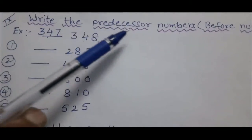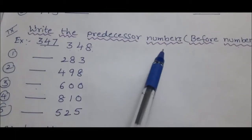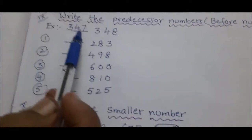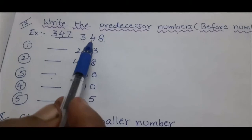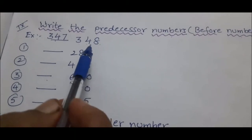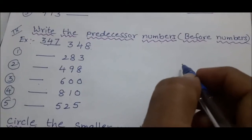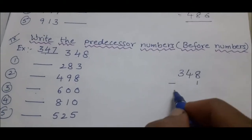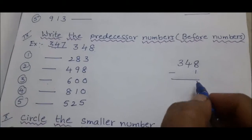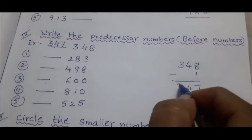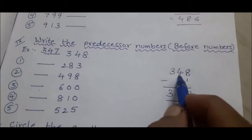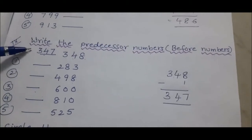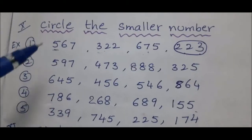Next: write the predecessor numbers, also known as before numbers. Example: 347 is the before number of 348. How do we get it? Just subtract 1 from the given number. 348 minus 1 equals 347. This is the before number of 348. Remaining problems, follow the above example.